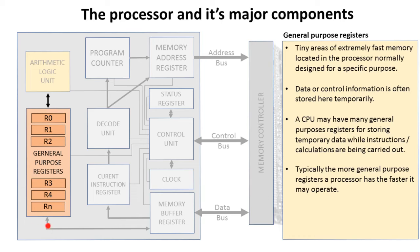The general purpose registers are tiny areas of extremely fast memory located inside the processor. Data or control information is often temporarily stored here. A CPU can typically have many general purpose registers for storing temporary data while instructions or calculations are being carried out. Typically, the more general purpose registers you have, the faster a processor may operate.